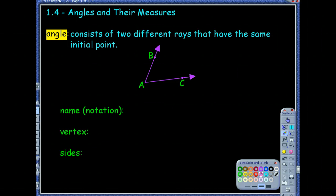An angle is something that consists of two different rays that have the same initial point. They can also be two segments or two lines.